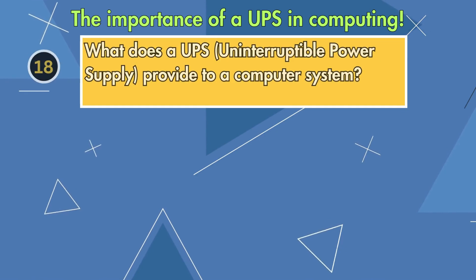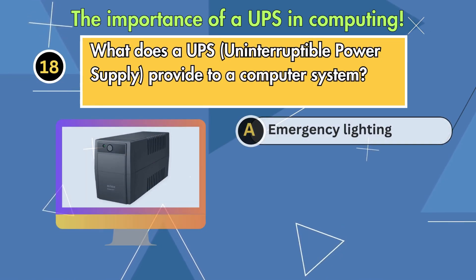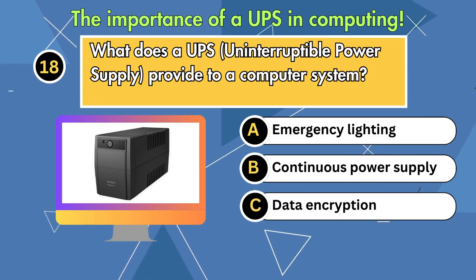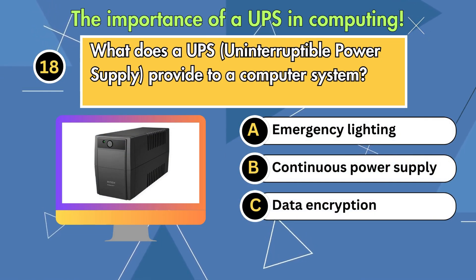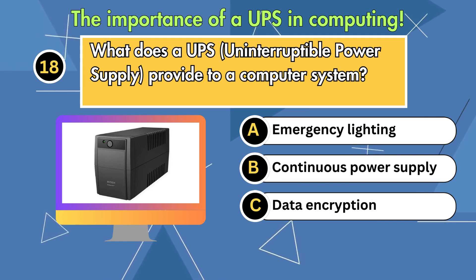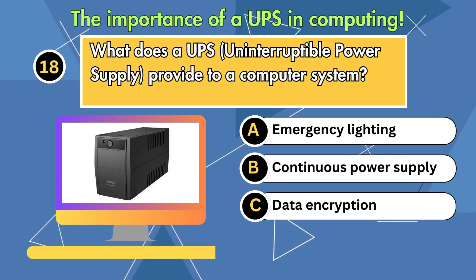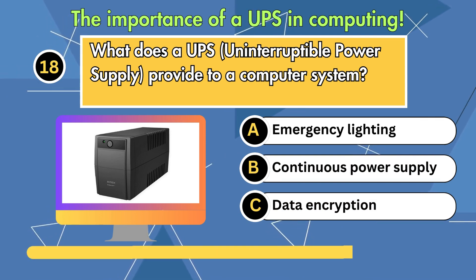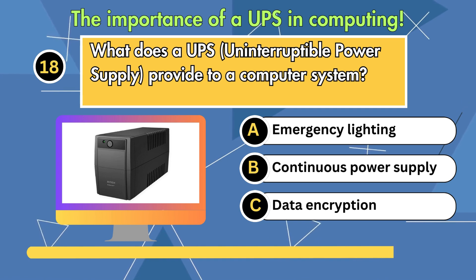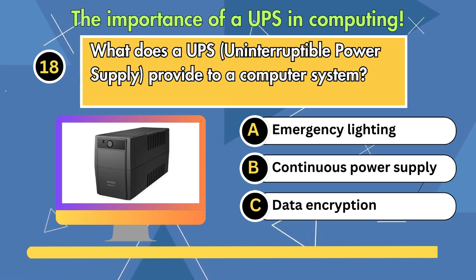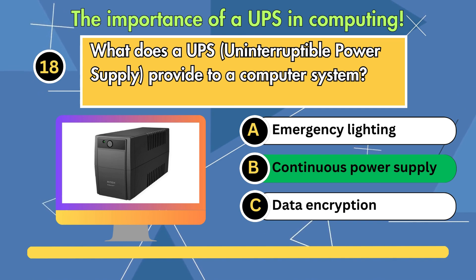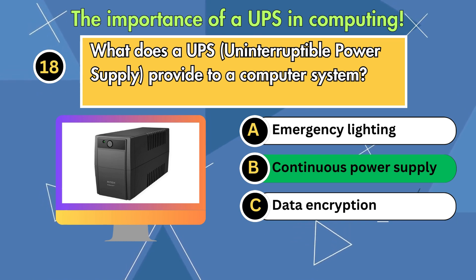What does a UPS (Uninterruptible Power Supply) provide to a computer system? Option 1: Emergency lighting. Option 2: Continuous power supply. Option 3: Data encryption. Answer is continuous power supply.